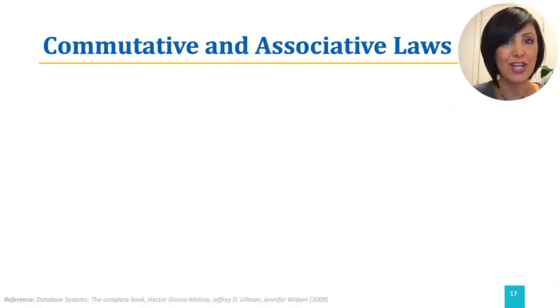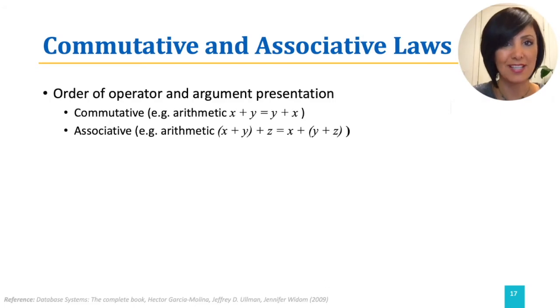A set of non-trivial laws that we use often are commutative and associative laws. Commutative and associative laws are laws about order of presentation. Commutative law about an operator says that it does not matter in which order you present the arguments of the operator. The result would be the same, such as x plus y equals y plus x. Associative law about an operator says that we may group two uses of the operator, either from the left or from the right, such as result of x plus y plus z equals x plus result of y plus z.